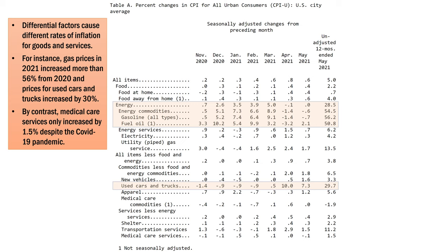Because demand and supply differ for different goods and services, and because changes in their demand and supply differ, different goods and services have different rates of inflation. For instance, gas prices in 2021 increased more than 56% from 2020, and prices for used cars and trucks increased by 30% in the same time period. By contrast, medical care services only increased by 1.5% in spite of the COVID-19 pandemic.